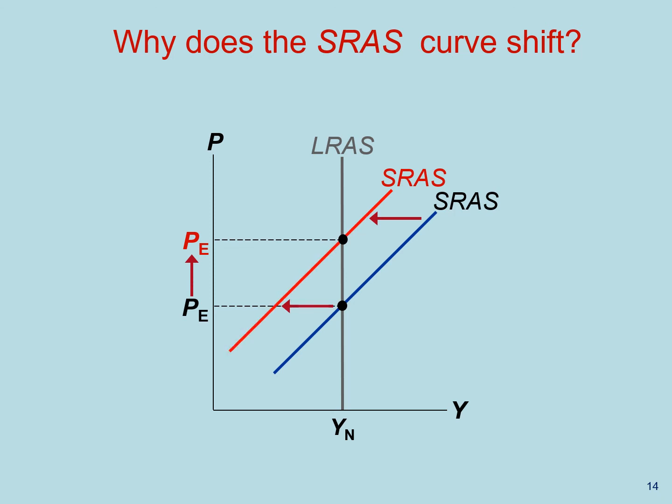So why does the short run aggregate supply curve shift? Well, first of all, because the long run aggregate supply curve YN is part of the short run aggregate supply curve, anything that shifts the long run aggregate supply curve will shift the short run aggregate supply also. In addition, changes in price expectations will shift the short run aggregate supply.